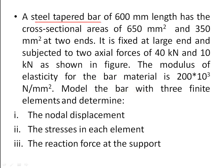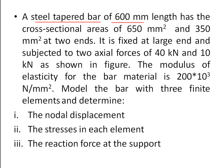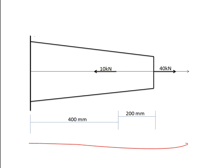A steel tapered bar is given. The total length is 600 mm. It has a cross-sectional area of 650 mm² and 350 mm² on its two ends. As it is a tapered bar, on both ends the cross-sectional area will be different — 650 on one side and 350 mm² on the other.